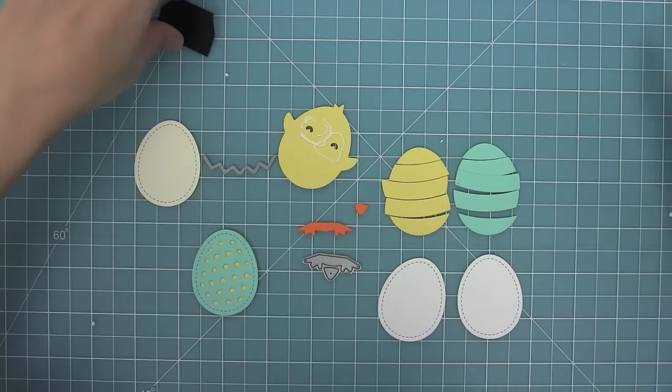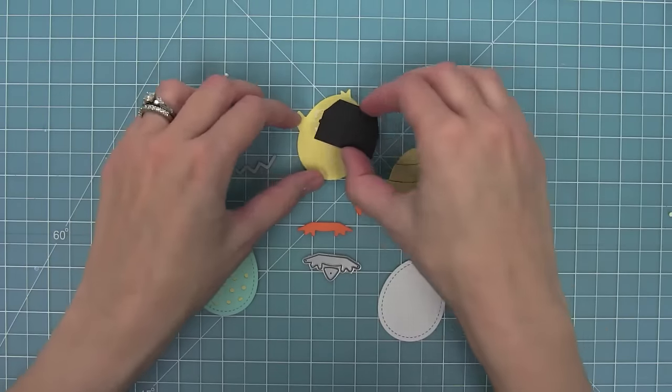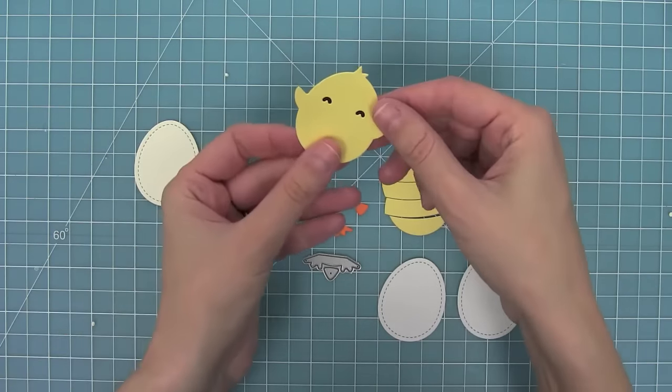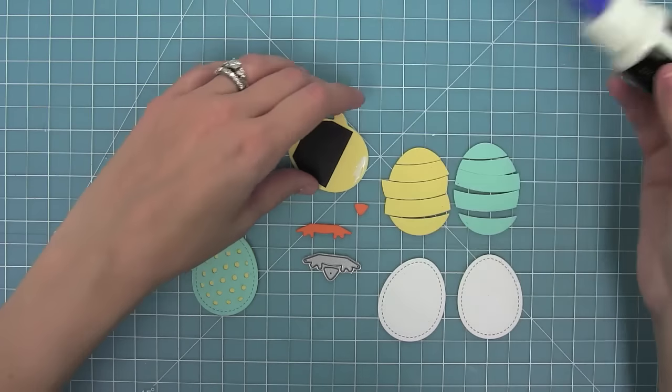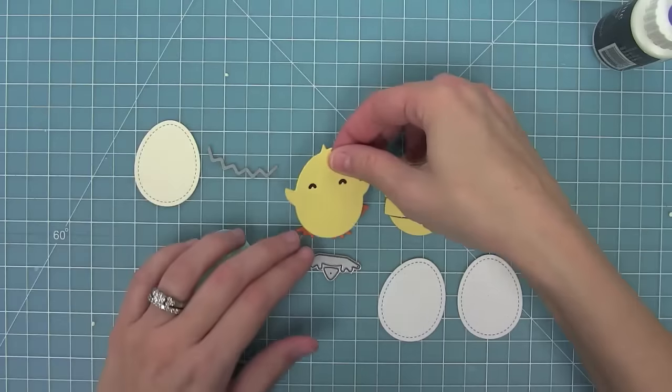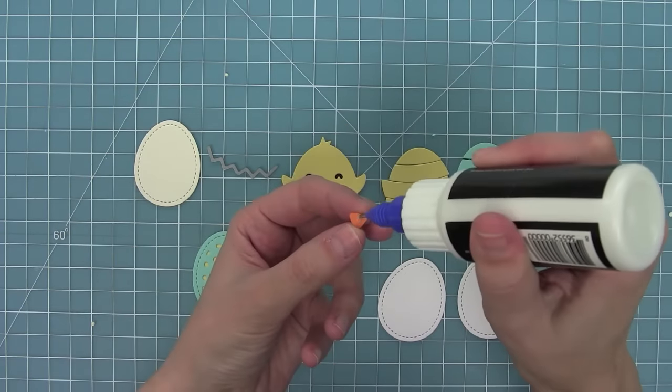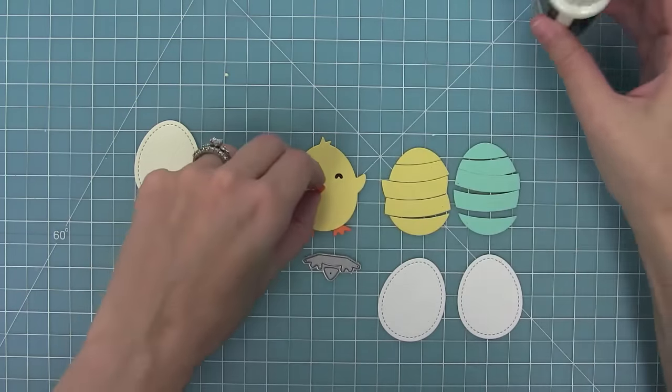Once that's all done you can go ahead and add the beak and the feet. That's a separate die so that you can cut it from a separate color of cardstock. He's been cut out of some new sticky note cardstock and his feet and his beak are cut from some fake tan and I love the combination of that orange and really nice kind of buttery yellow.